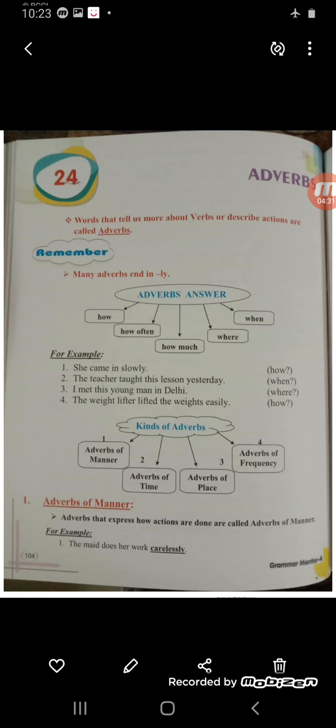There are different kinds of adverbs, and we are going to do only four kinds. Adverb of manner, adverb of time, adverb of place, and adverb of frequency. Let's start with adverb of manner. Adverbs that express how actions are done are called adverb of manner — action kaise hua, how did you walk, that is adverb of manner.